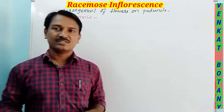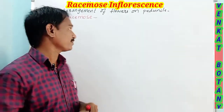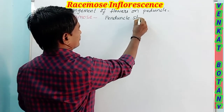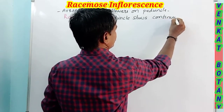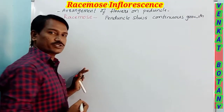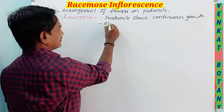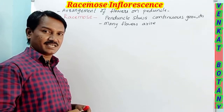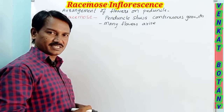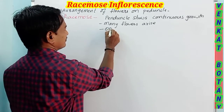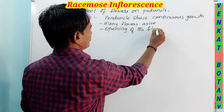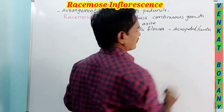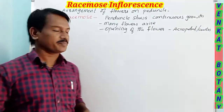In racemose inflorescence, the peduncle shows indefinite or continuous growth. On that peduncle, many flowers arise laterally. The arrangement of flowers on the peduncle is in an acropetal manner, that is, the opening of the flower proceeds in an acropetal or centripetal manner.